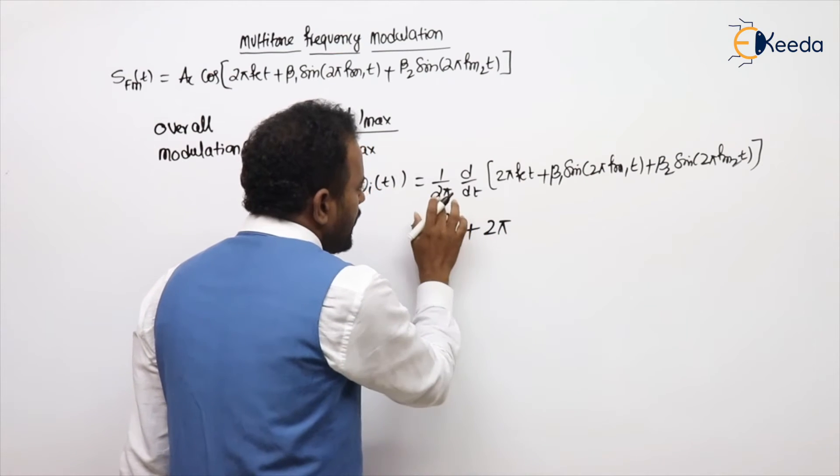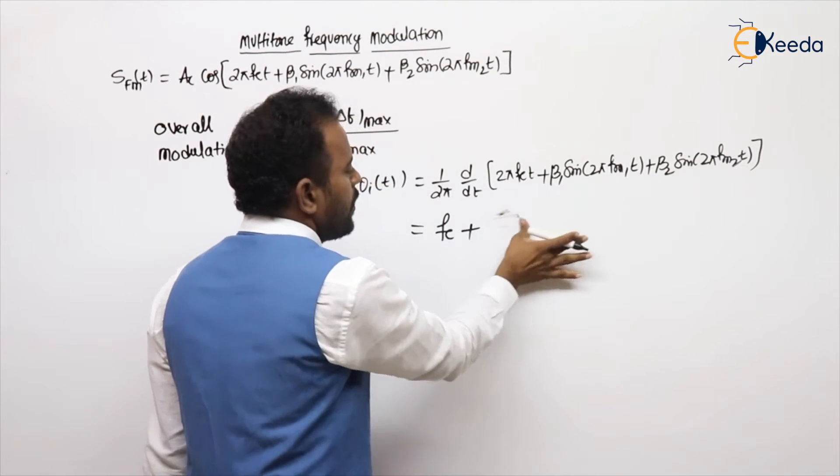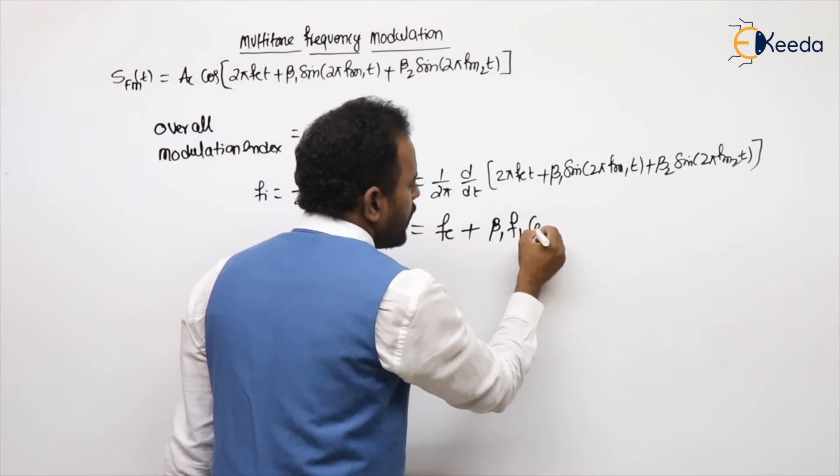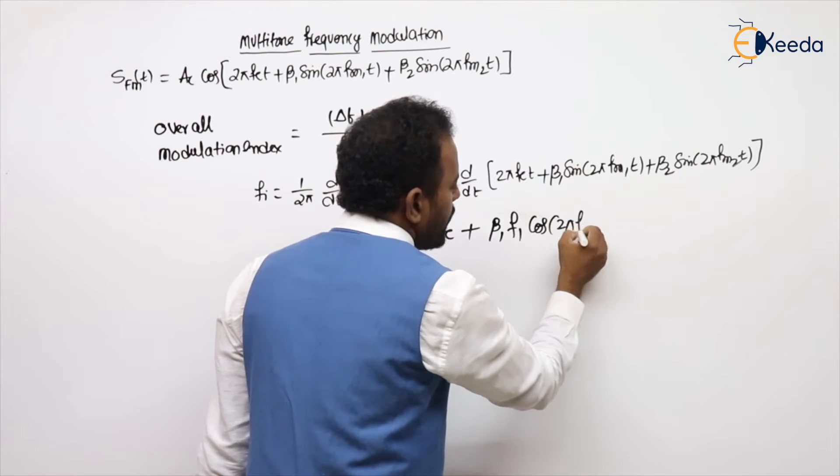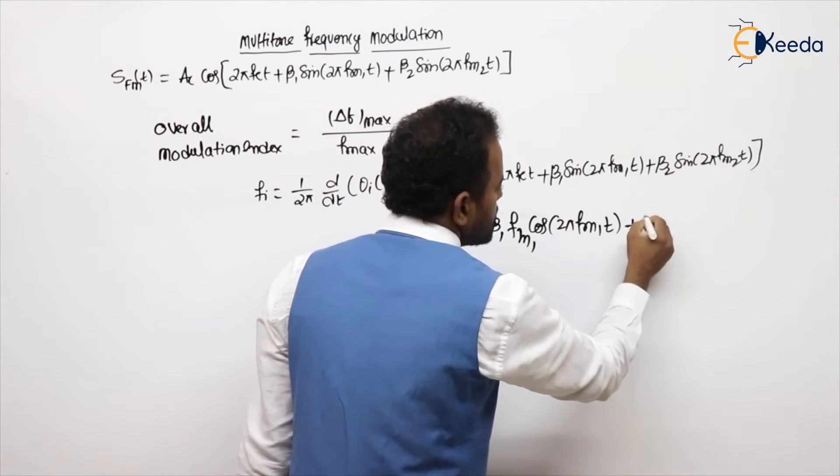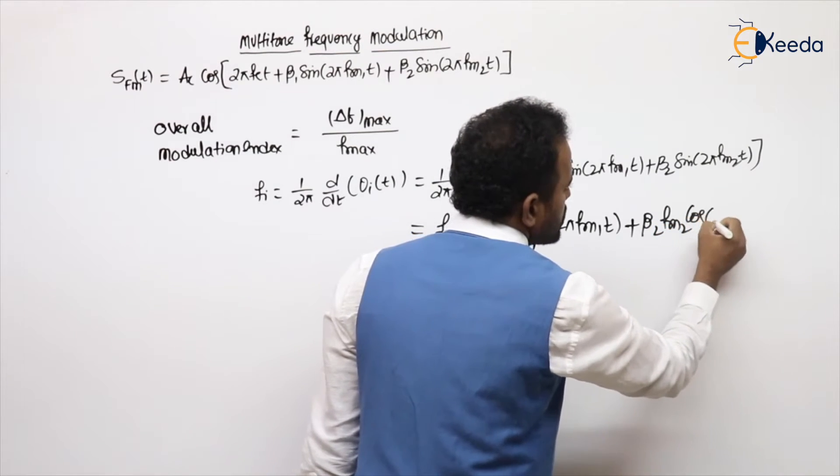If you are able to understand, already here 2π is there, that 2π will be gone. What is the remaining? β1 fm1 cos 2π fm1 t plus here also β2 fm2 cos 2π fm2 t.